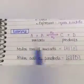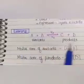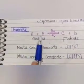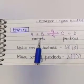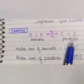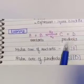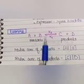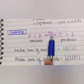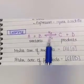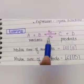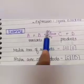Starting from a very simple example: we have reactants A and B, and products C and D. The Law of Mass Action applies to reversible reactions, which is why we have a reversible reaction here.